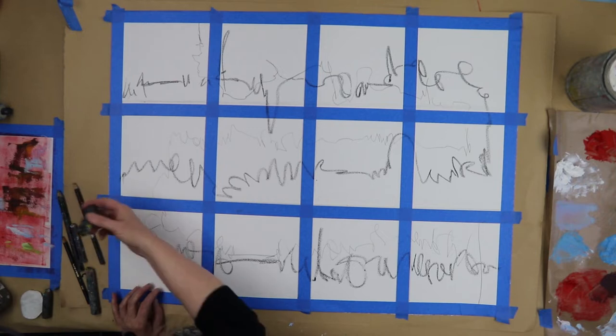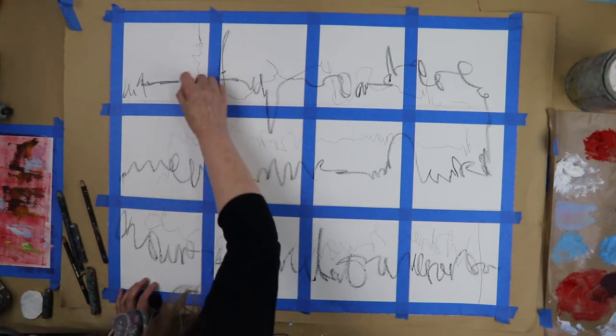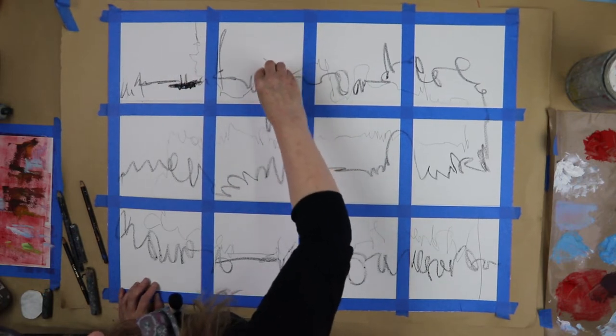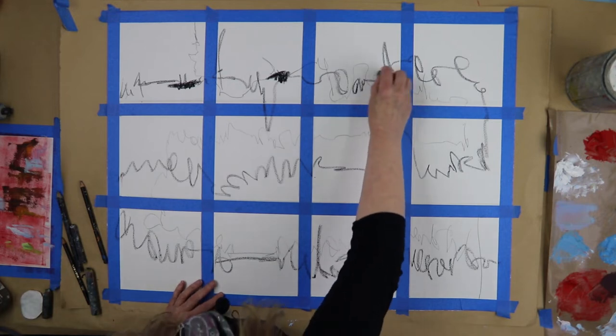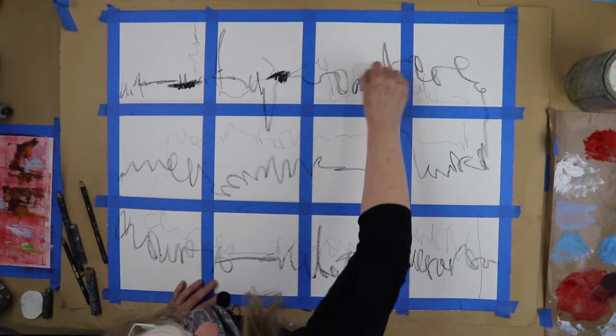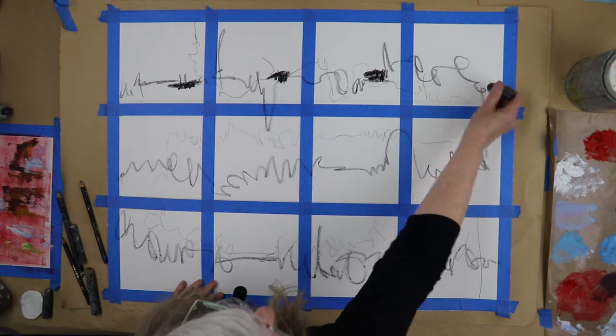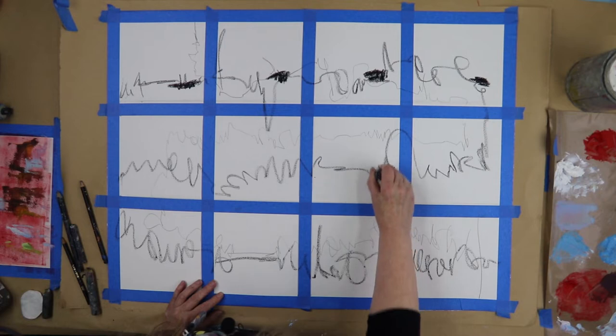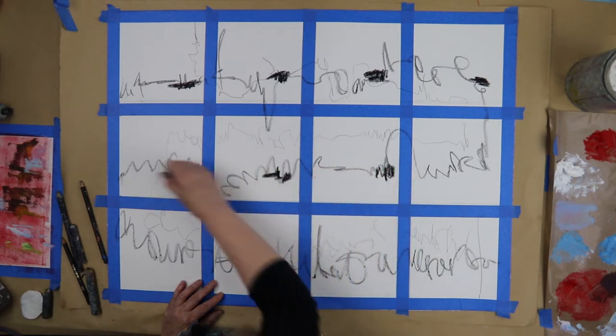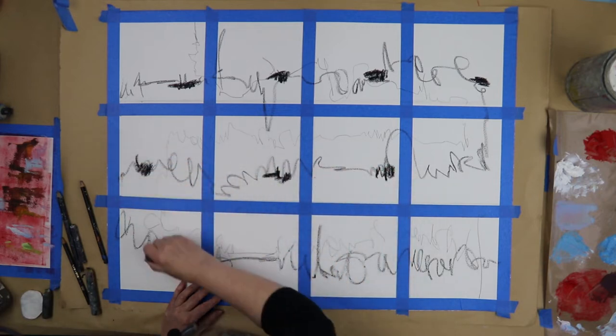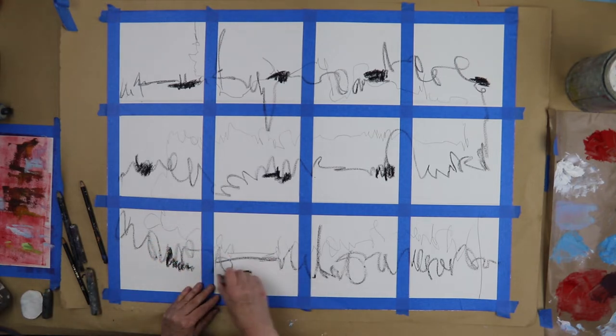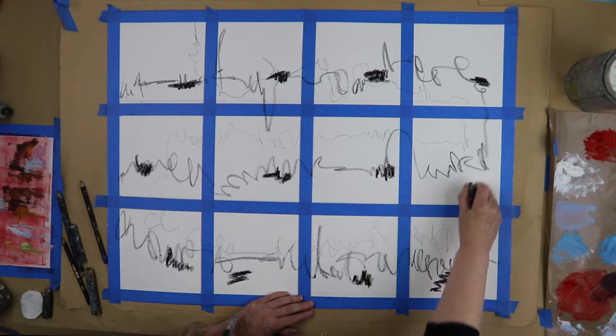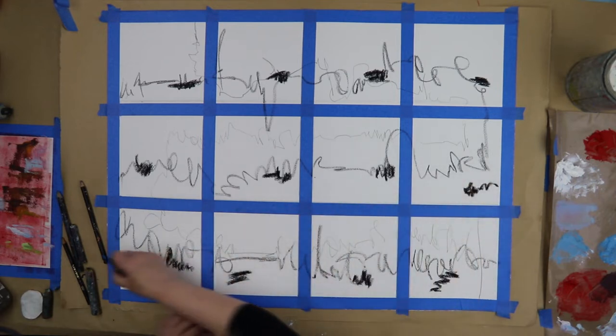Okay, so this is some charcoal. I'm just going to put a little bit because I know this charcoal, it's going to move around a little bit. I could make a lot of gray. I don't want to make a lot of gray.